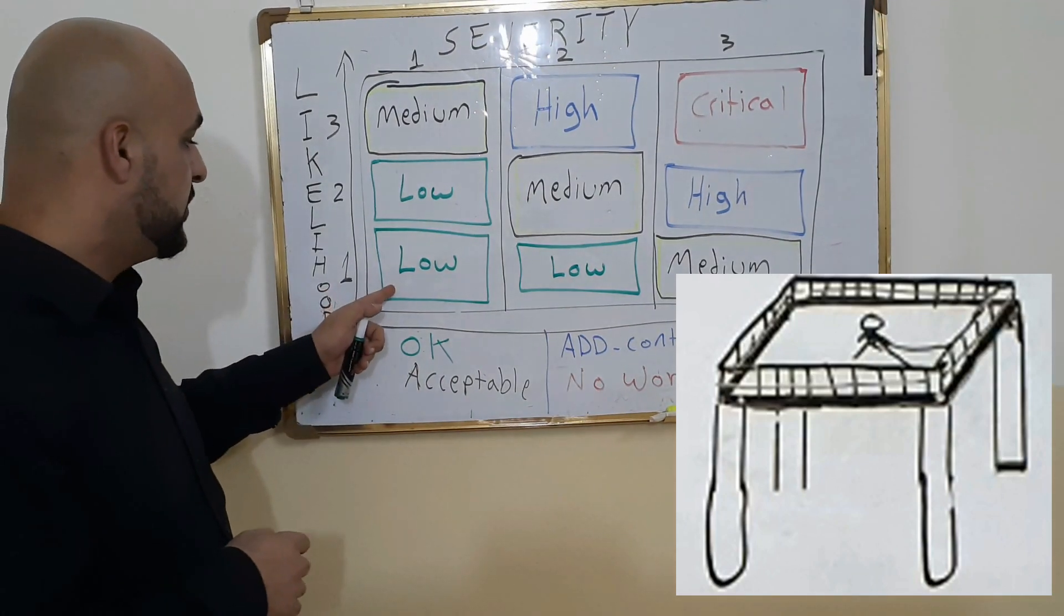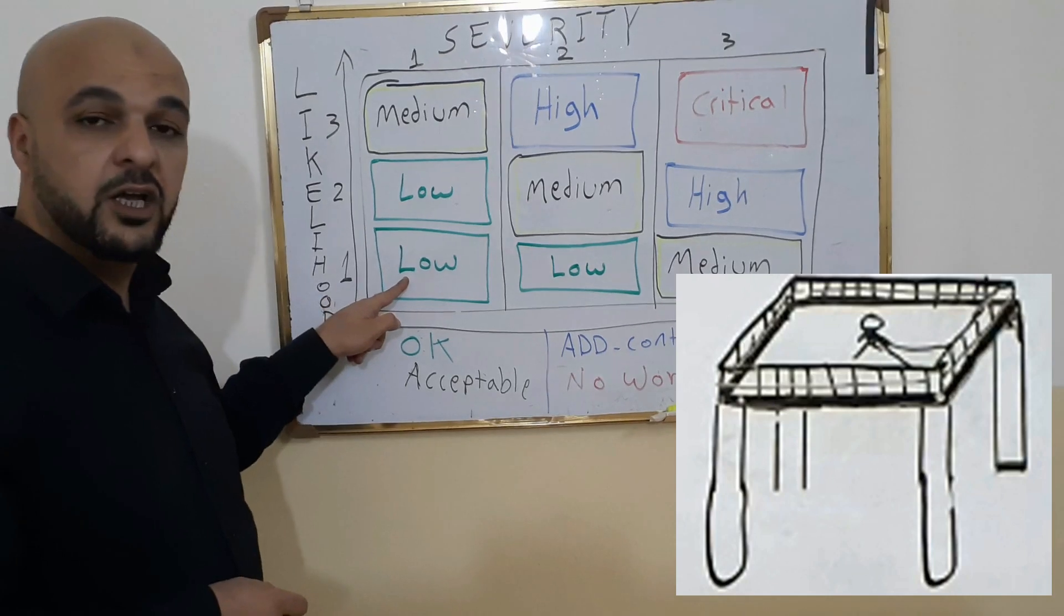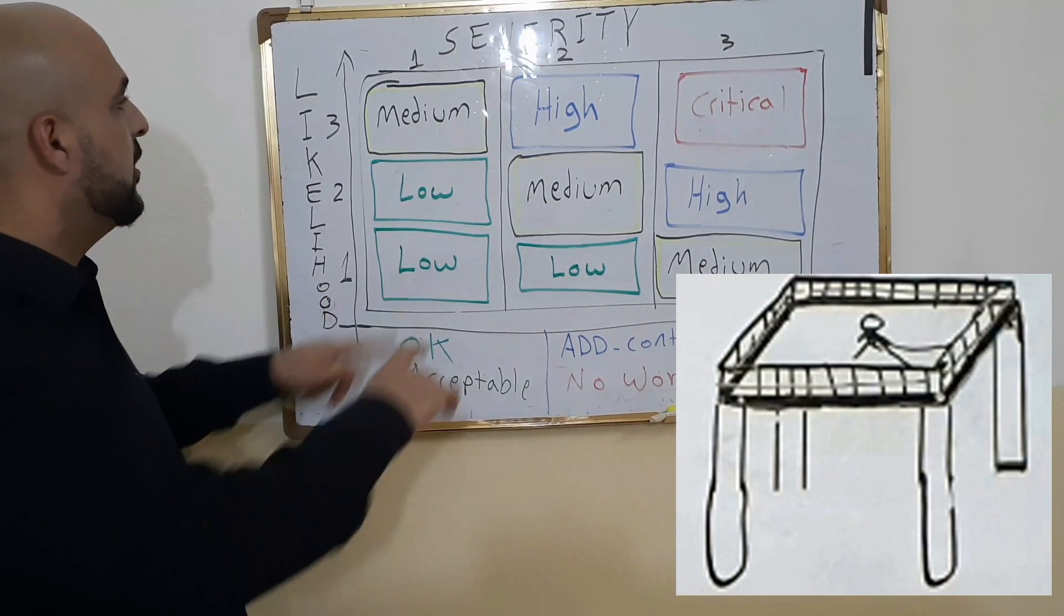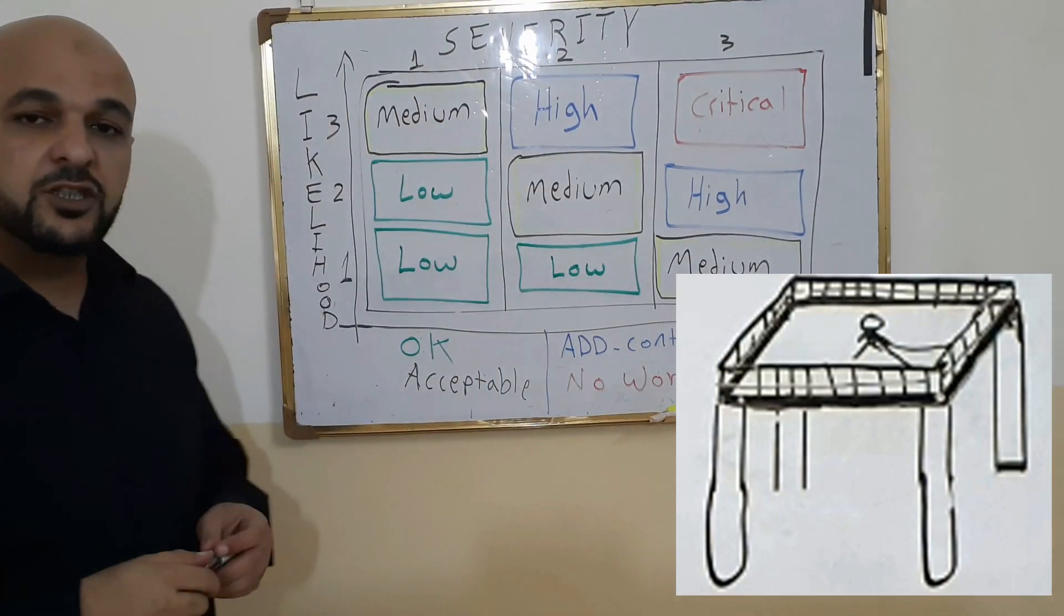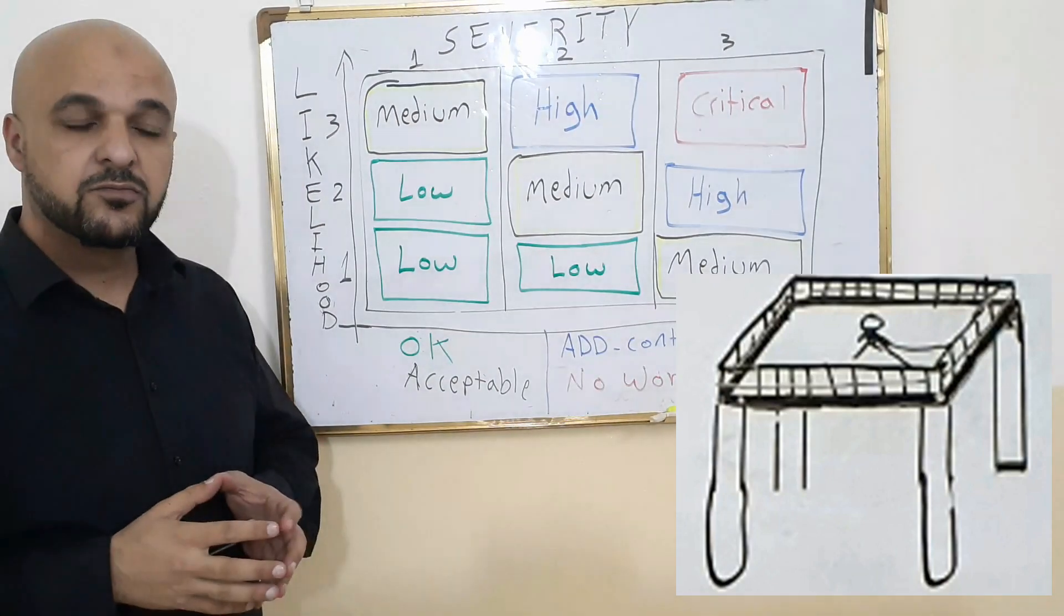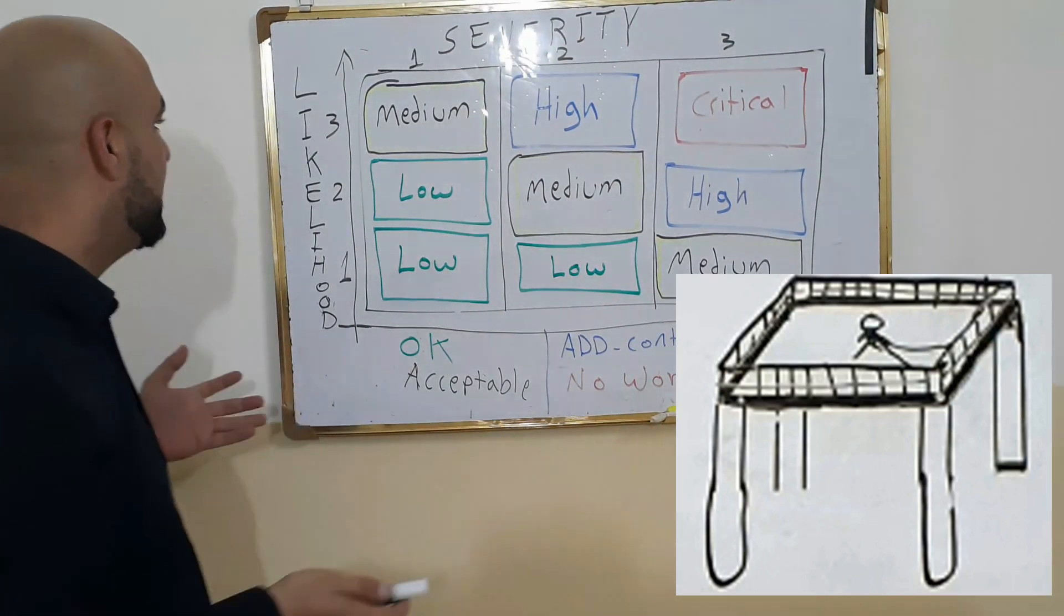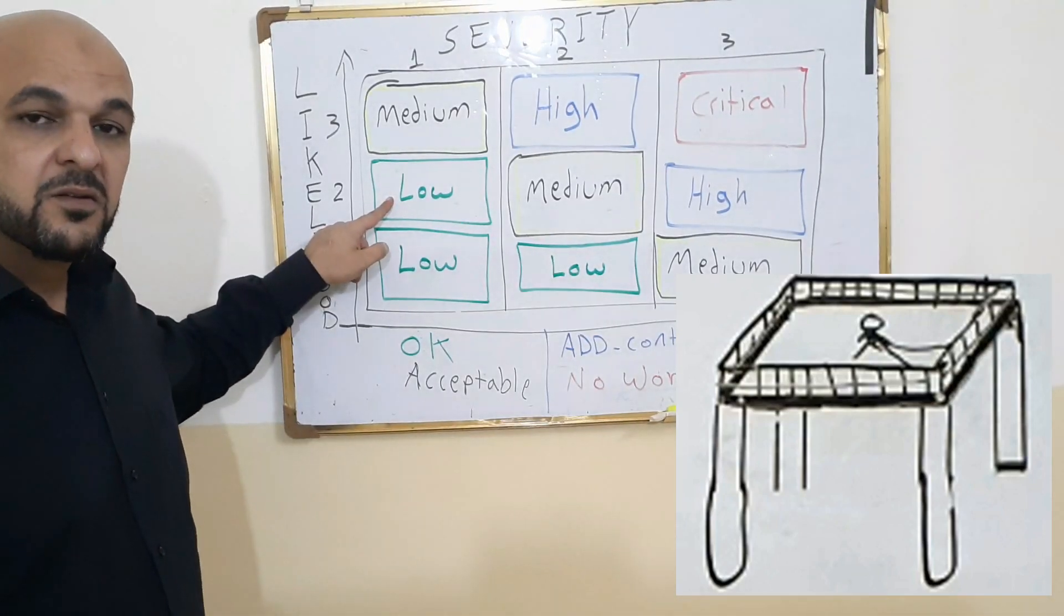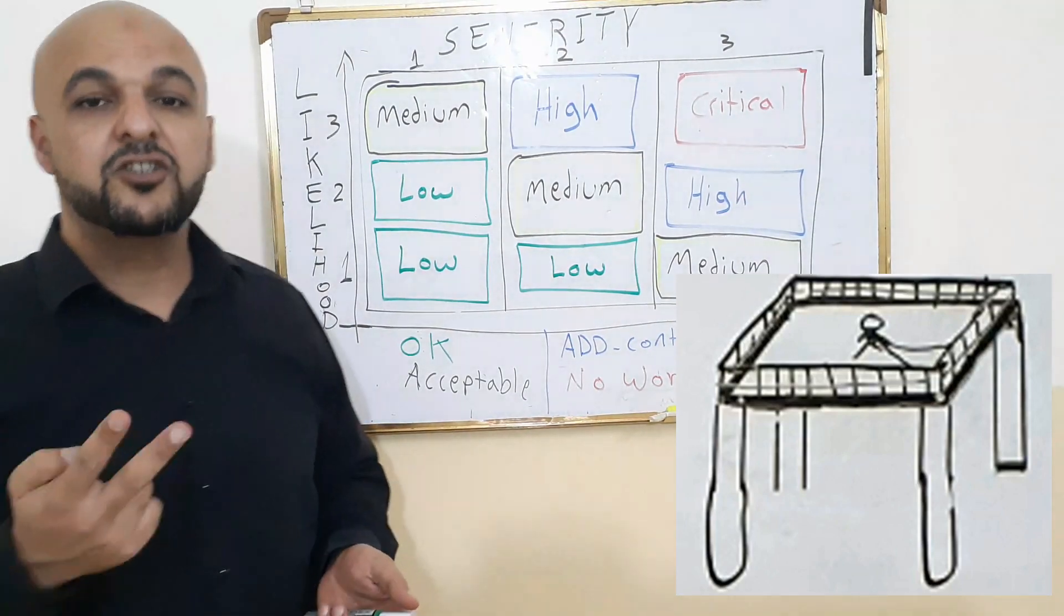So one, this is the likelihood of his fall. One, it is very low or low. What about the severity? What about the severity of his fall? Like we said, he's not going to fall. But if he does, if he does, two. The severity of his fall or his injuries will be two.